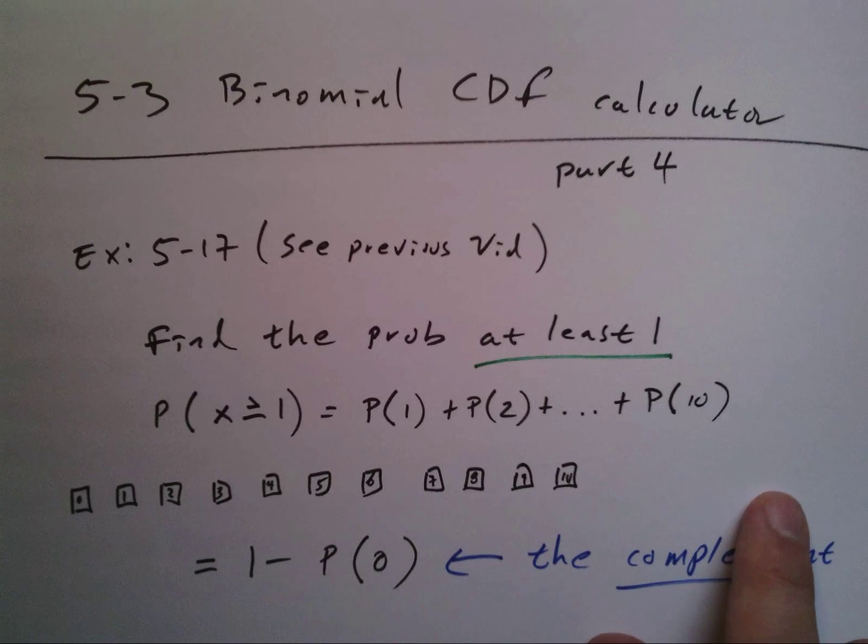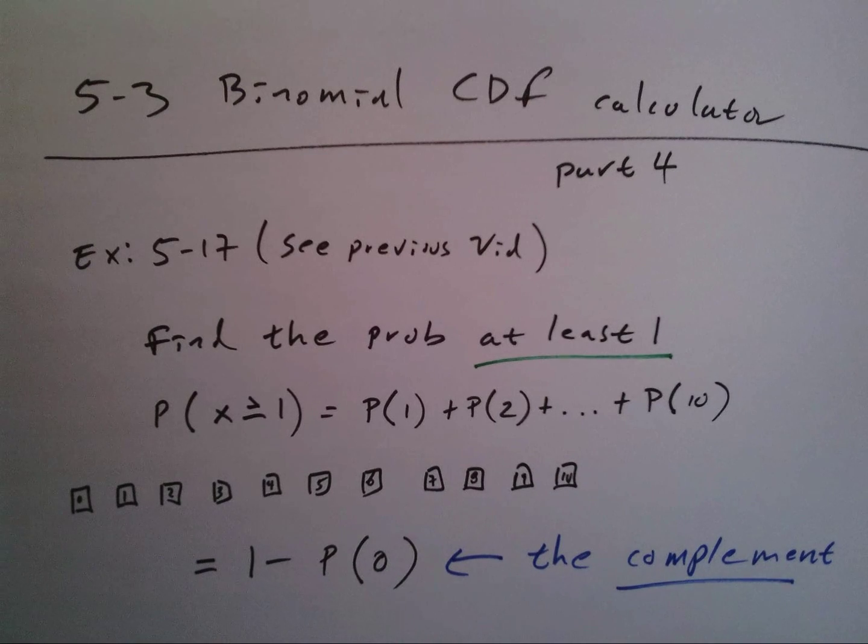At least one means the probability that x is greater than or equal to one, because at least one would include two, three, four, five - it includes all these things. Now do you really want to plug all of that into the calculator?